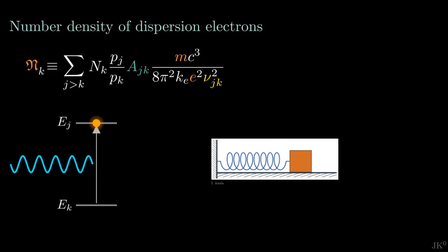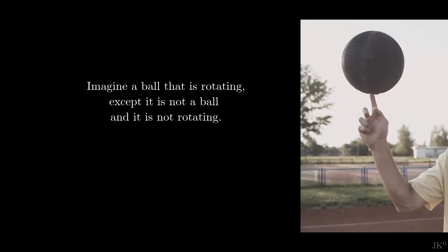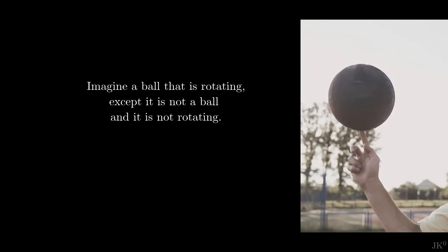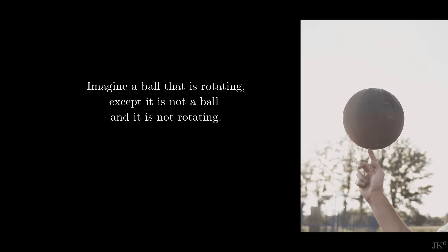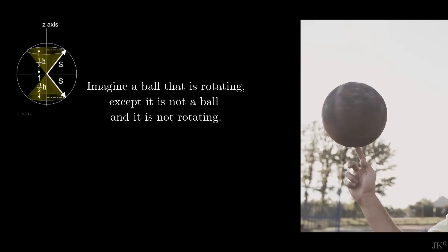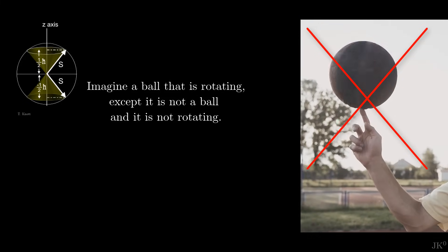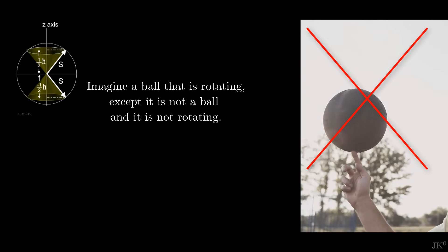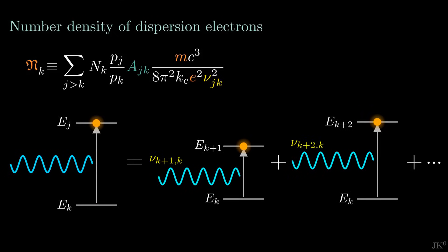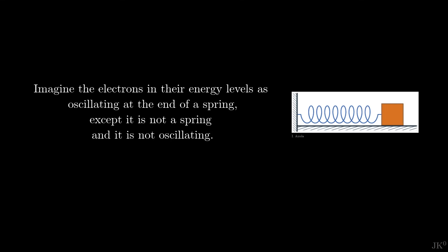I cannot stress enough how important this concept is. Nothing is really vibrating, but the mathematics describing the atom with all its energy levels is similar to the mathematics of a collection of classical oscillators. As an analogy, you have probably heard the joke about explaining spin: imagine a ball that is rotating, except it is not a ball and is not rotating. I personally really like this joke, because it reflects the idea of a mathematical description of a concept that must not be taken literally. The electron is not a spinning ball, but the mathematics of quantum spin is similar to the mathematics of a classical spinning ball.